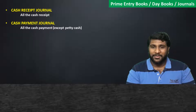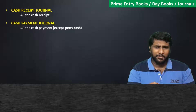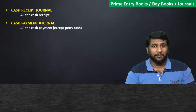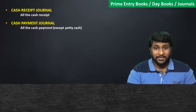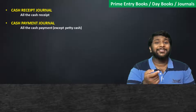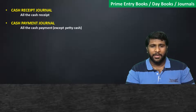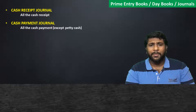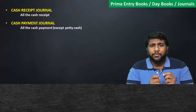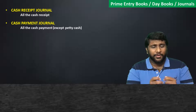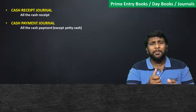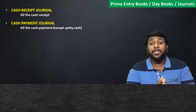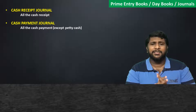In the cash payment journal you record whatever cash payment transactions. However, you have to remember that in businesses there will also be small petty cash payments. For example, purchasing a pen or a bundle of A4 papers — these are very small expenses the company will incur.